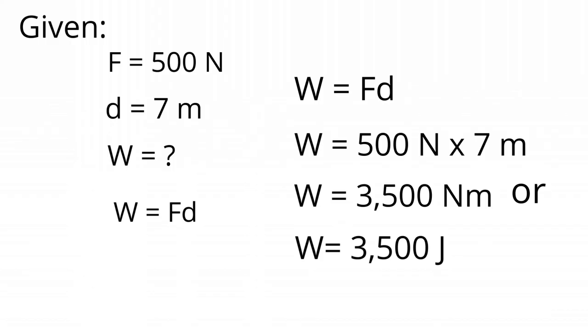Since the unknown is work, we use the equation work equals force times distance. Next substitute the value of the known quantities and perform the operations. So, the work done is 3500 newton meter or 3500 joule.